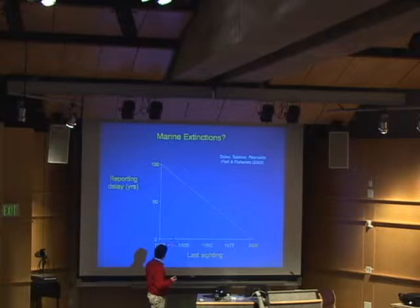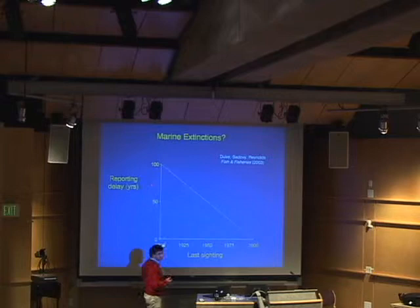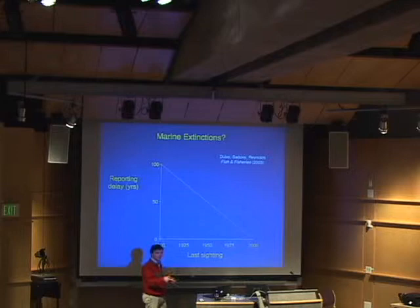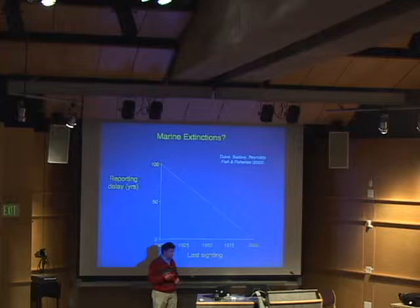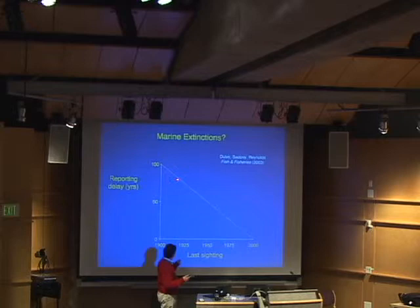What would you expect? If you were to plot the date on which something was last seen — we published the paper in 2003, we had data that went up to 2000. Here's the potential date of the last sighting and the reporting delay you could have had. For example, if something disappeared in 1900 and it was not seen in 1900, the longest it could have taken for somebody to notice would be 100 years as of the year 2000. So what this line is showing is the maximum reporting delay you could have had as of the year when we did the survey. That's the outer boundary — the worst case scenario.